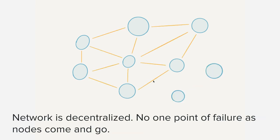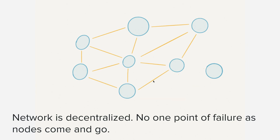Another important thing is that this peer-to-peer network is decentralized — there's no real one point of failure as nodes come and go. If we add a new node to the network, the other computers or servers on that network recognize that this is somebody new and they share the information with that new node and carry on as they normally would. Also, if one computer or node goes down, the others carry on. That's a very powerful piece — it's decentralized, there's no one main computer, and all of them are equal.